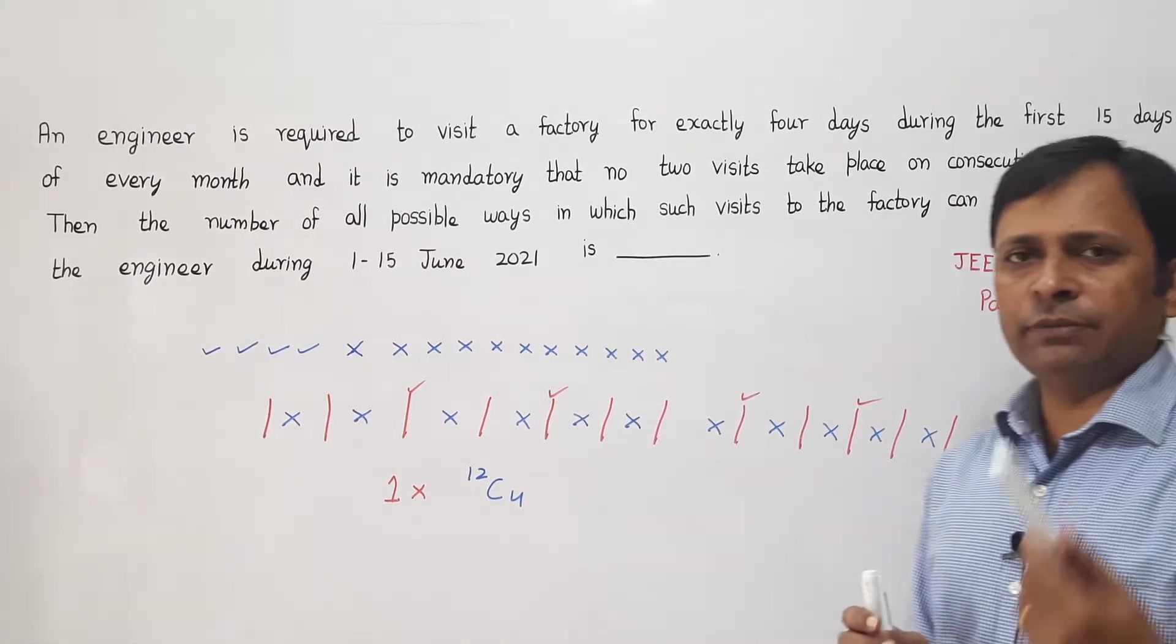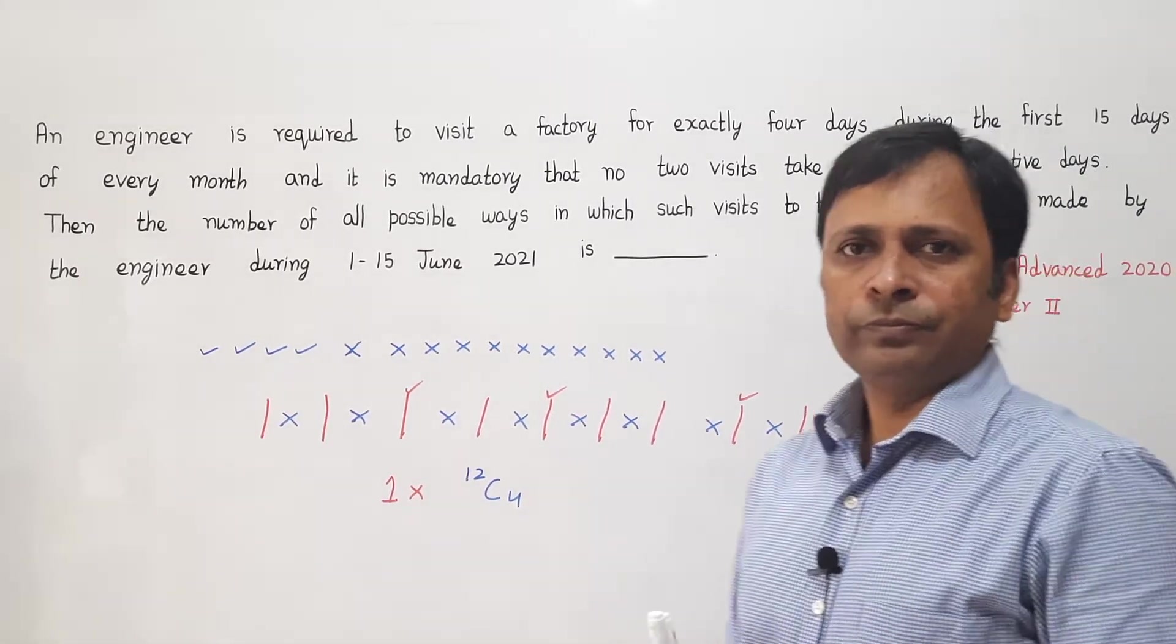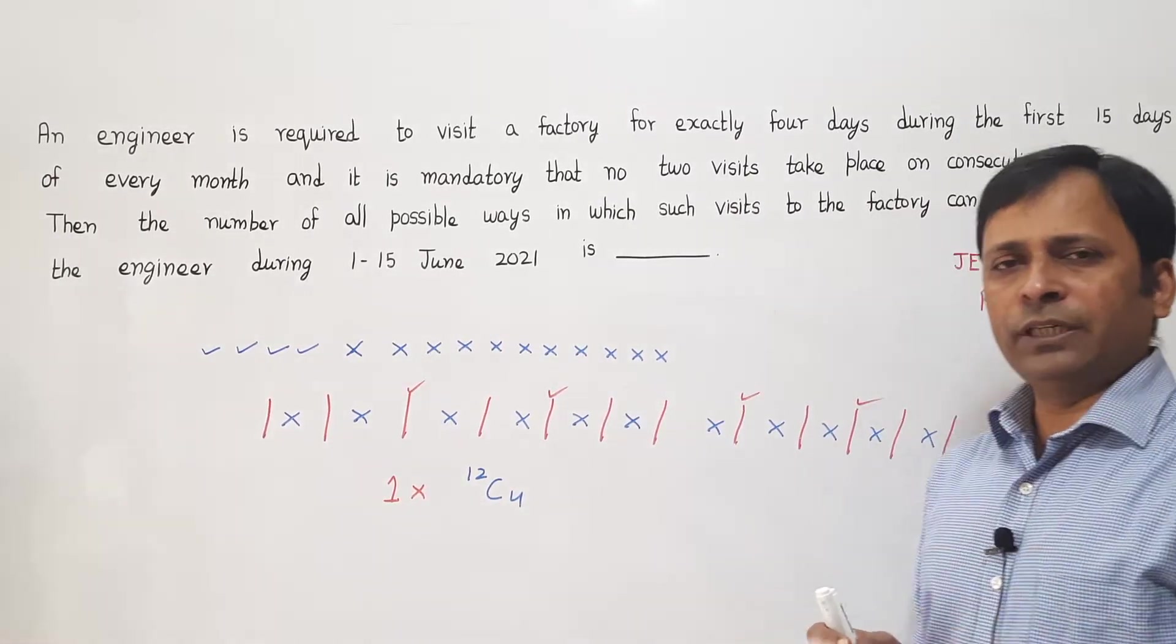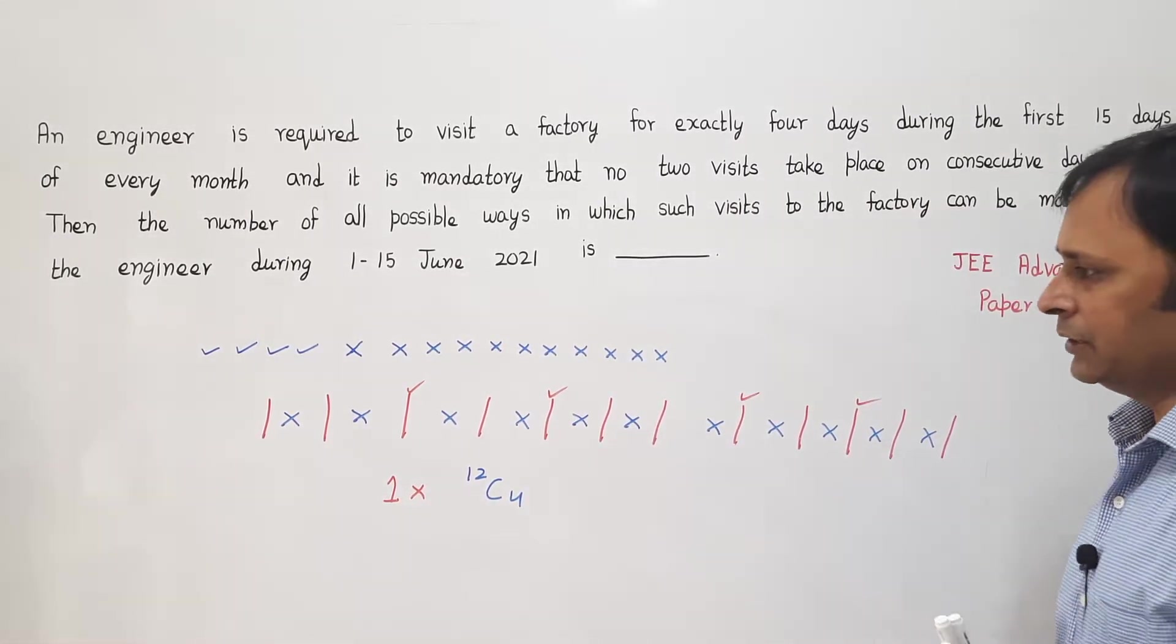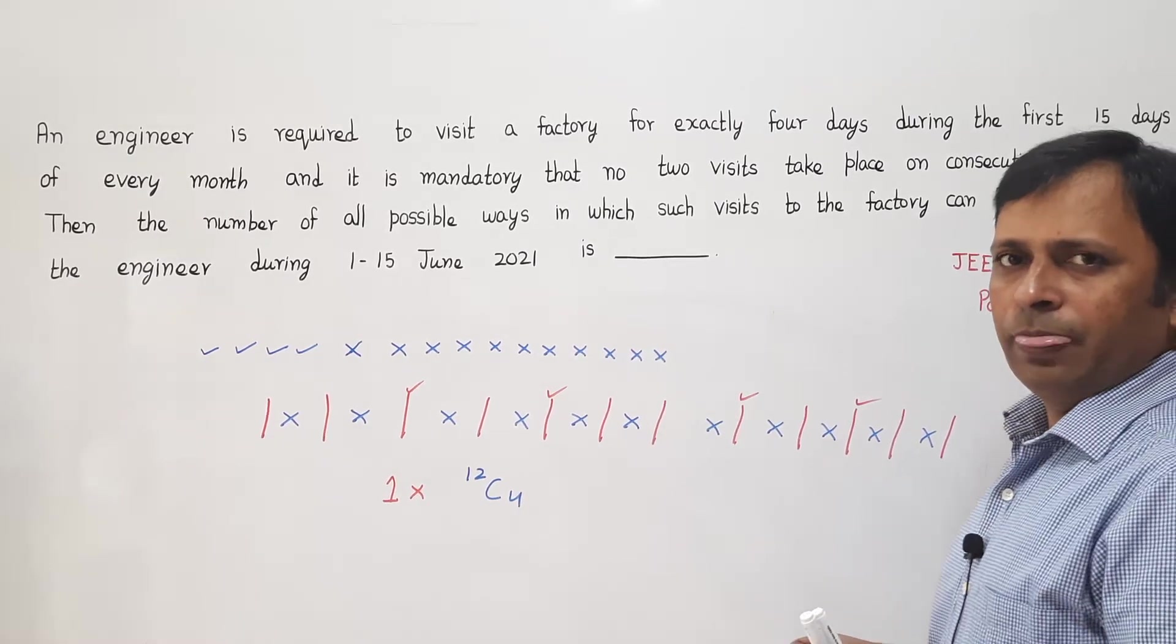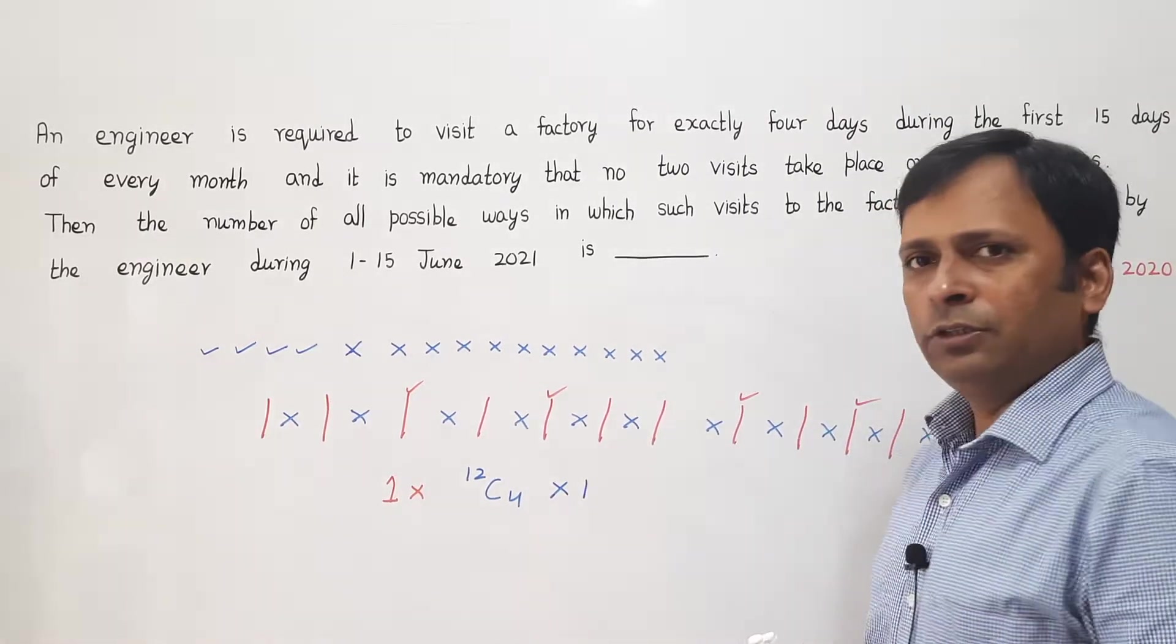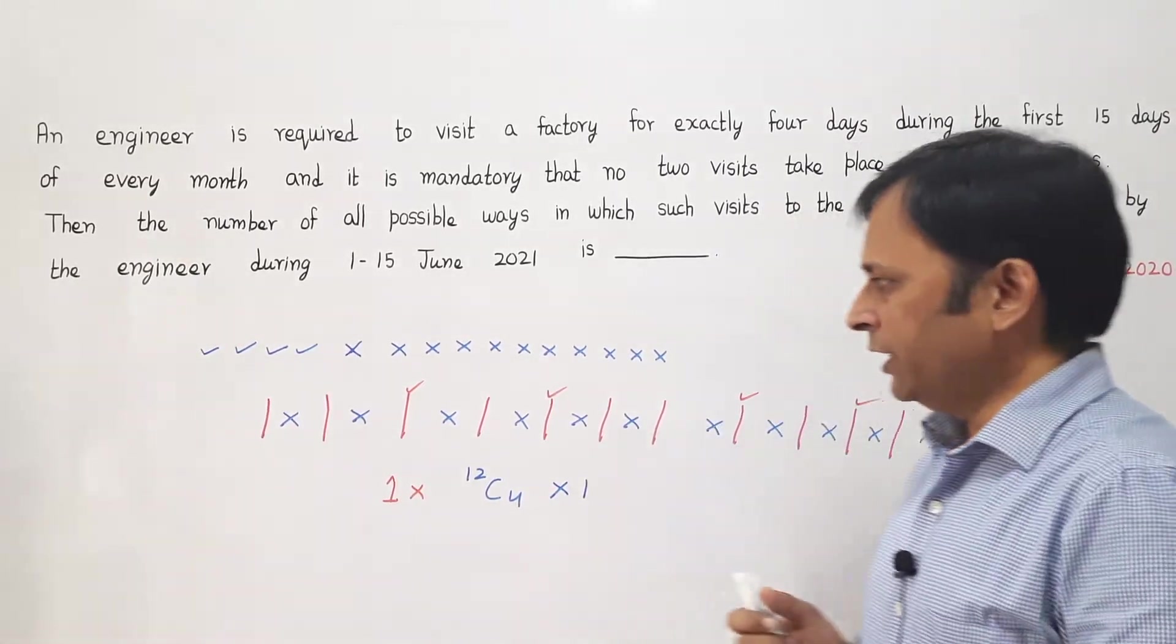Now these ticks can be arranged only in 1 way. Again for the same reason, once I put a tick, that would mean the engineer has made the visit on that particular day. There is no distinction between any 2 ticks. So there is only 1 way to arrange the ticks.